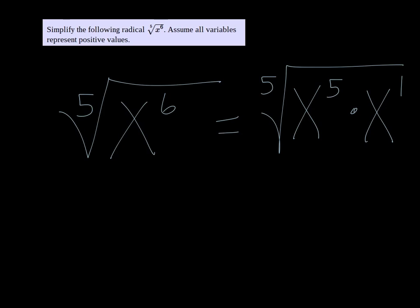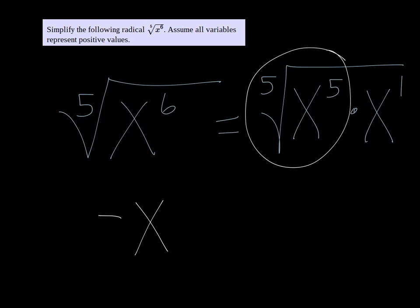Breaking it down like that, we can see that the fifth root of x to the fifth would just be x. So we would get x times the fifth root, and the only thing left in the radical is just x.